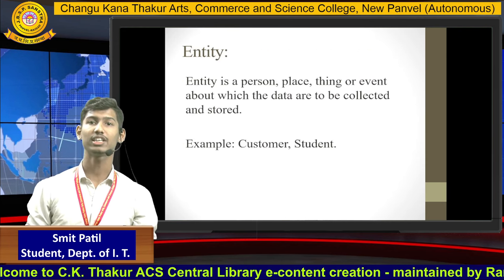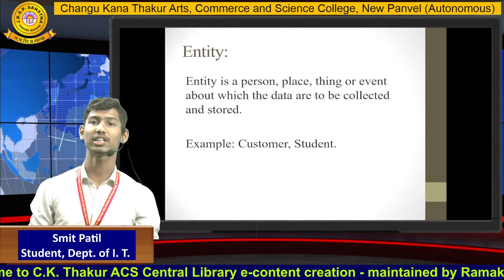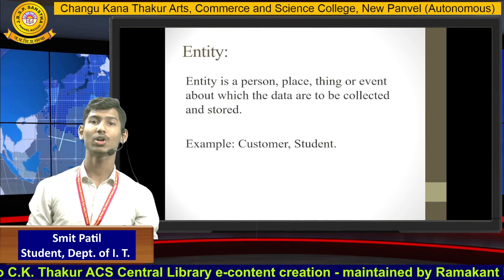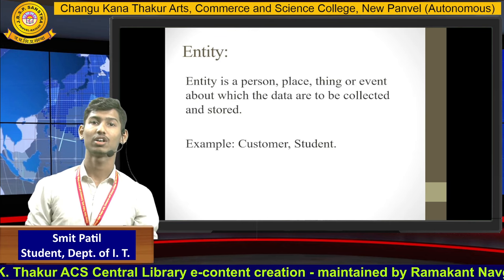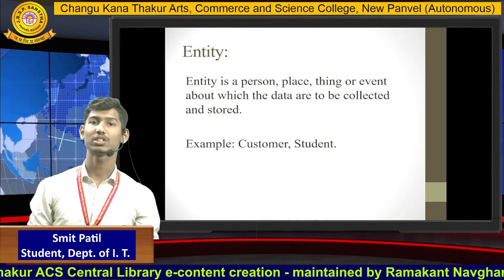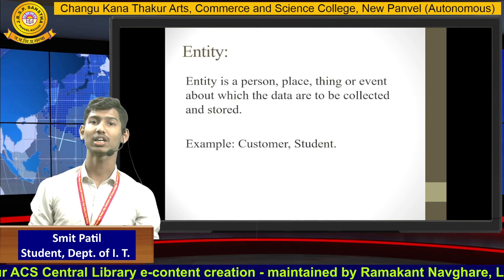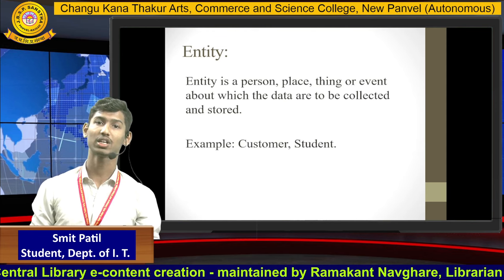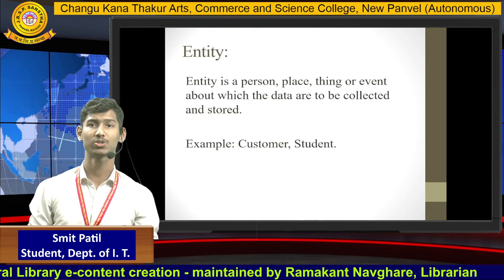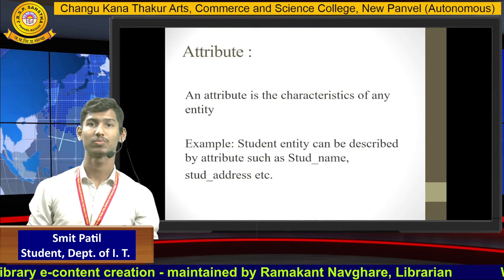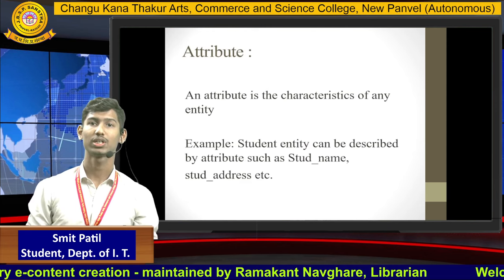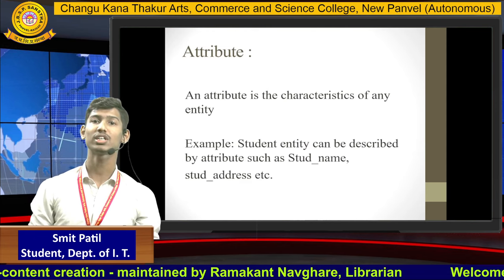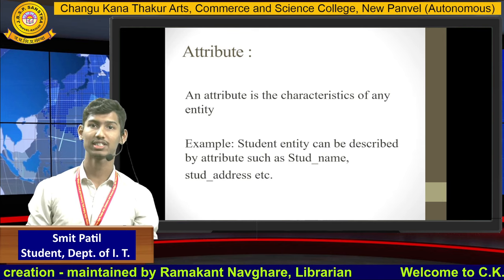Entity is a person, thing, or event about which data are collected and stored. Examples include customers and students. Attributes are a characteristic of an entity.